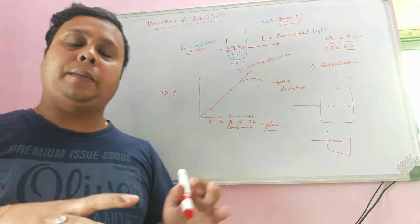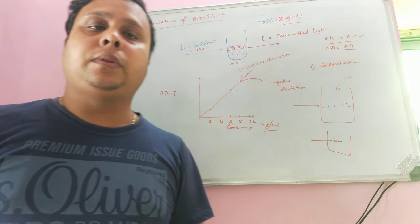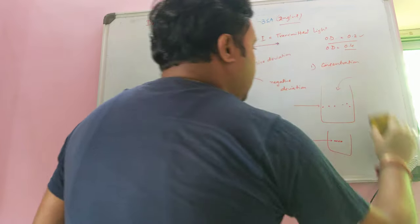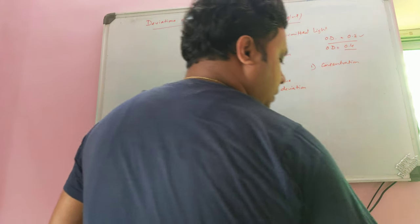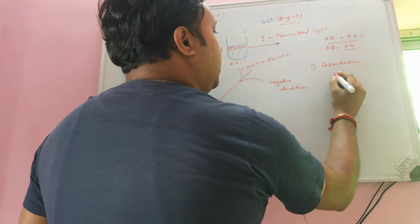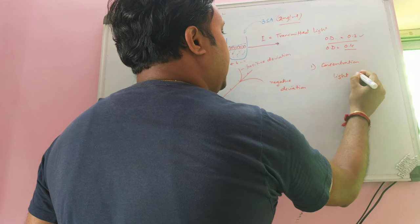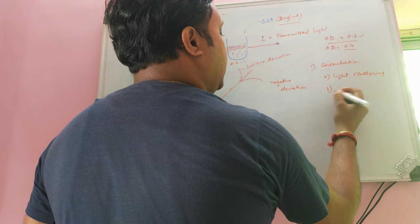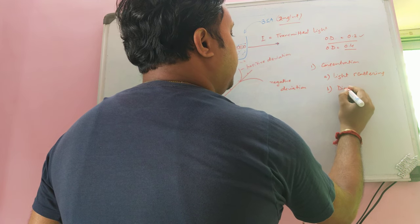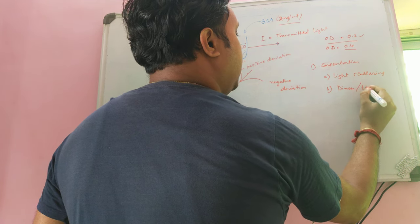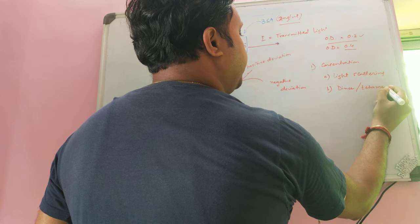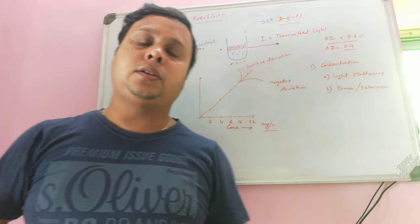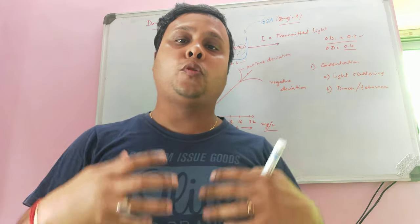This deviation may happen in the case of high concentration. The second effect at high concentration is light scattering. When a dimer, trimer, tetramer, or polymer forms — for example, in the case of lipid or phospholipid molecules that tend to form spherical micelle-like structures — the polymeric structure can cause light scattering when light passes through it.